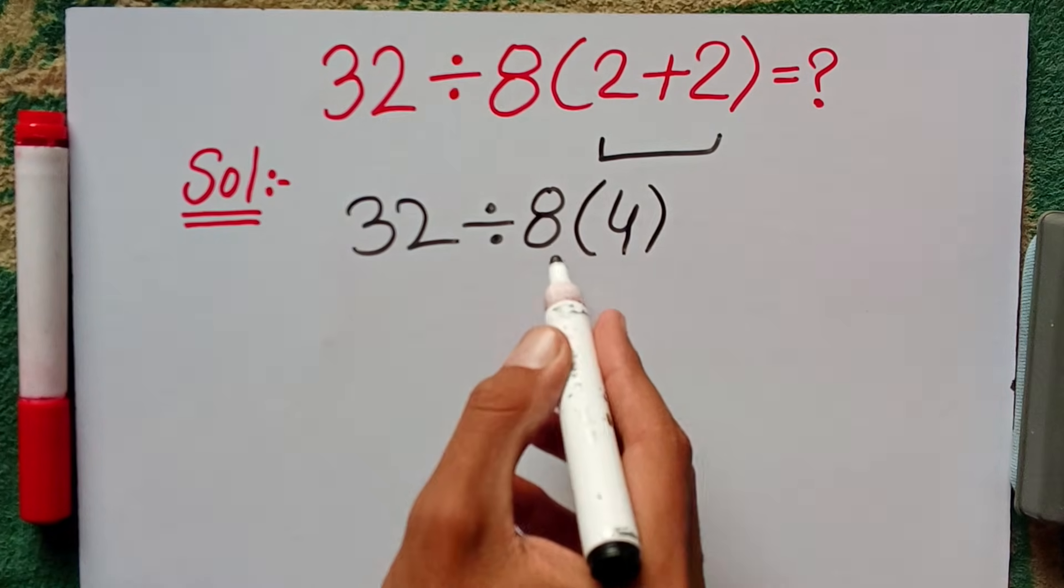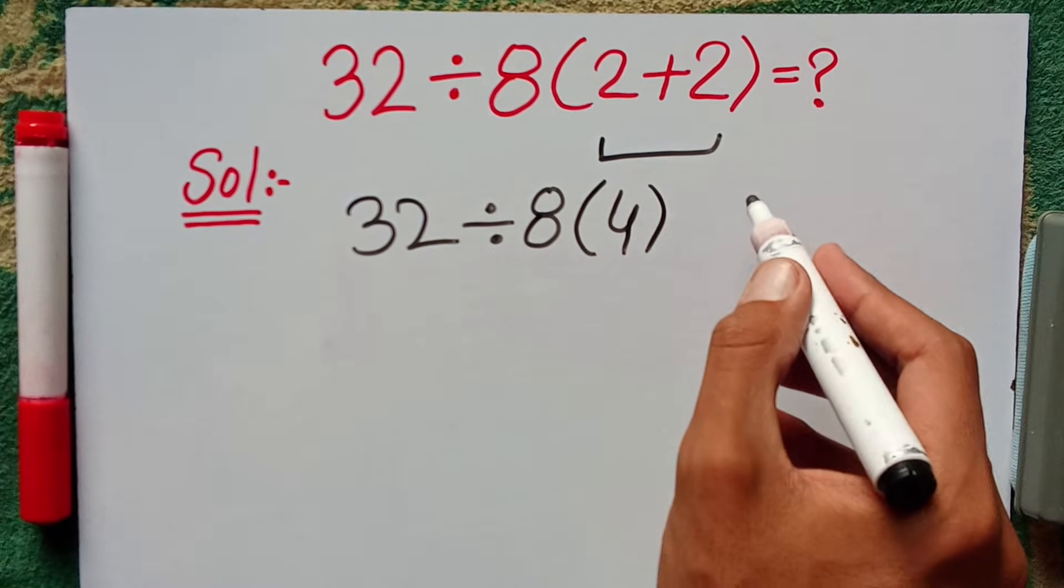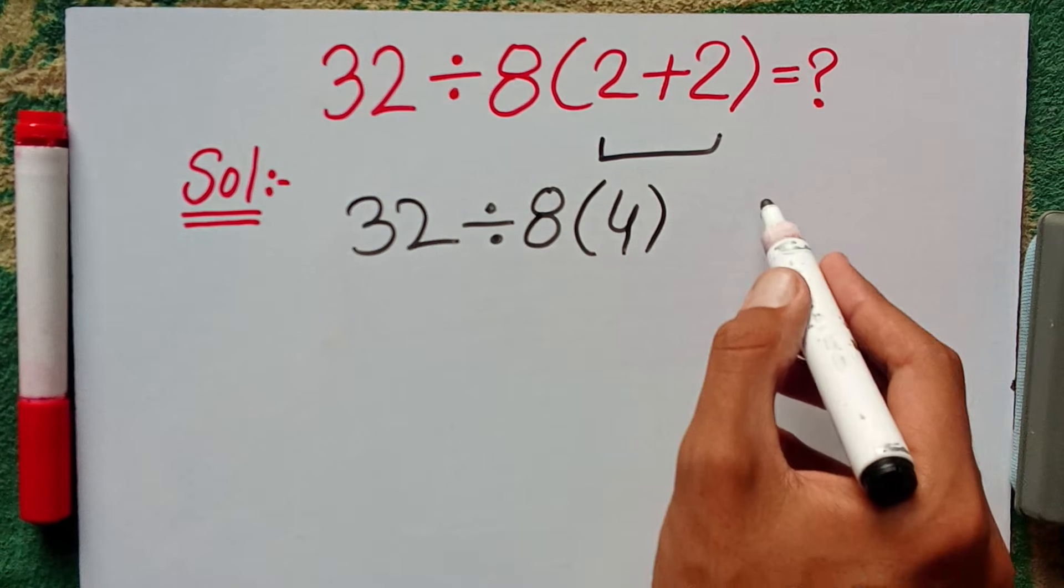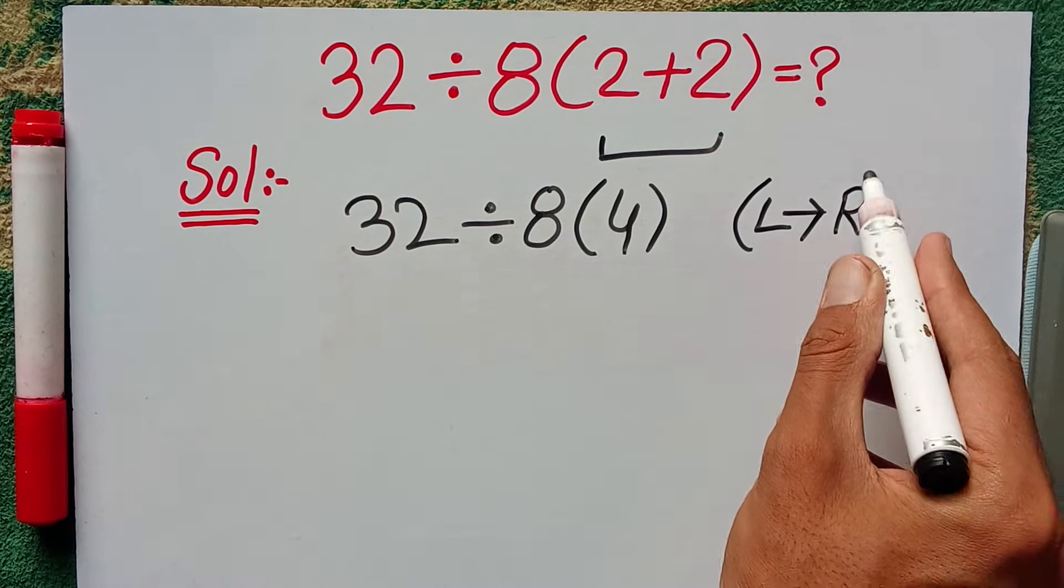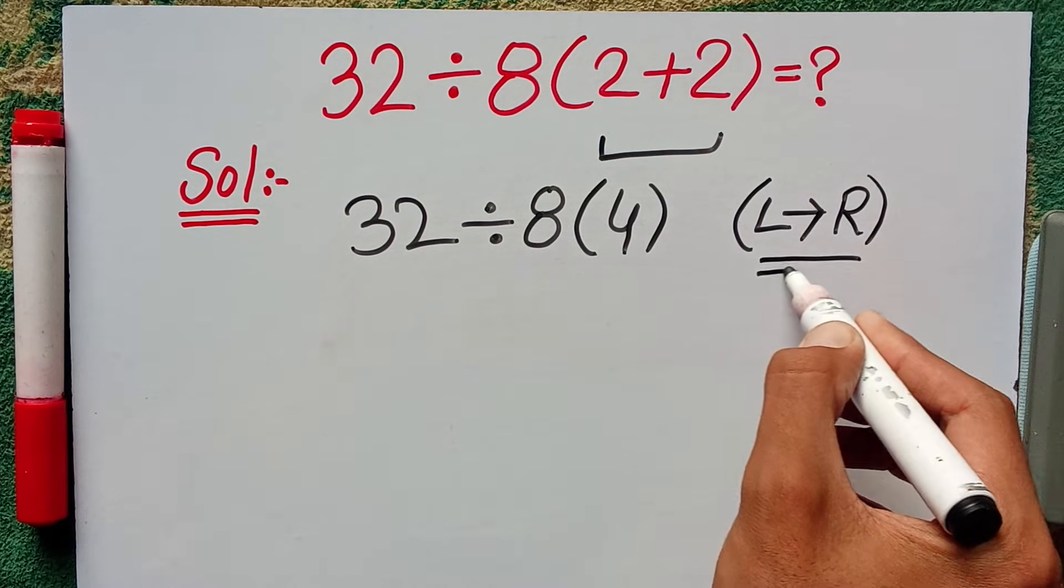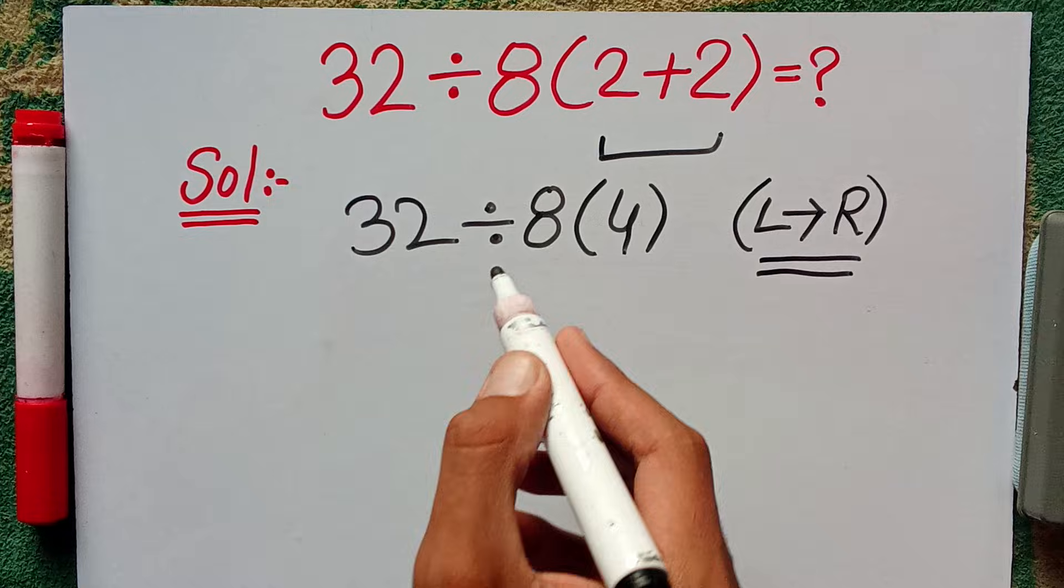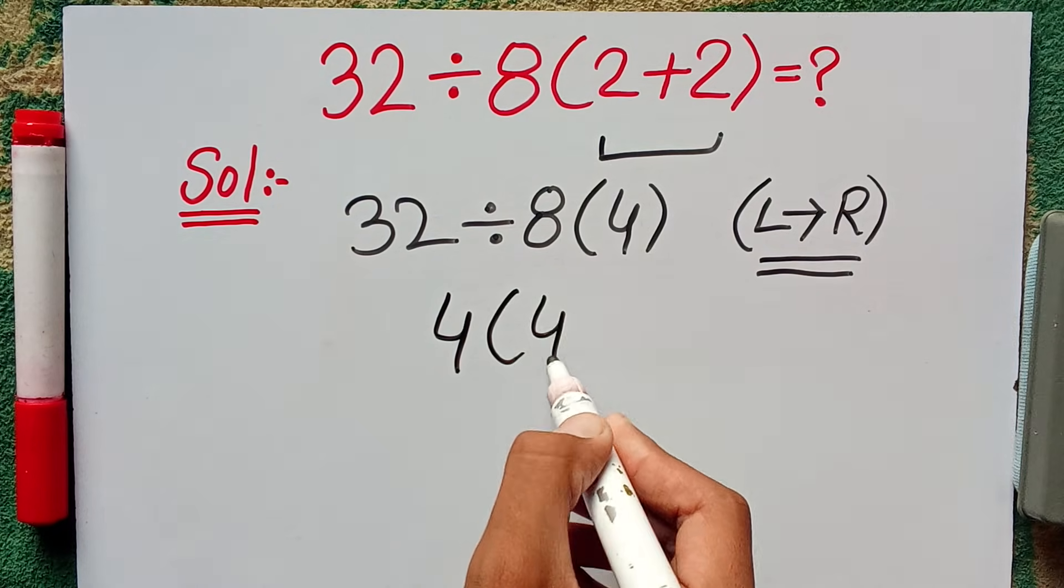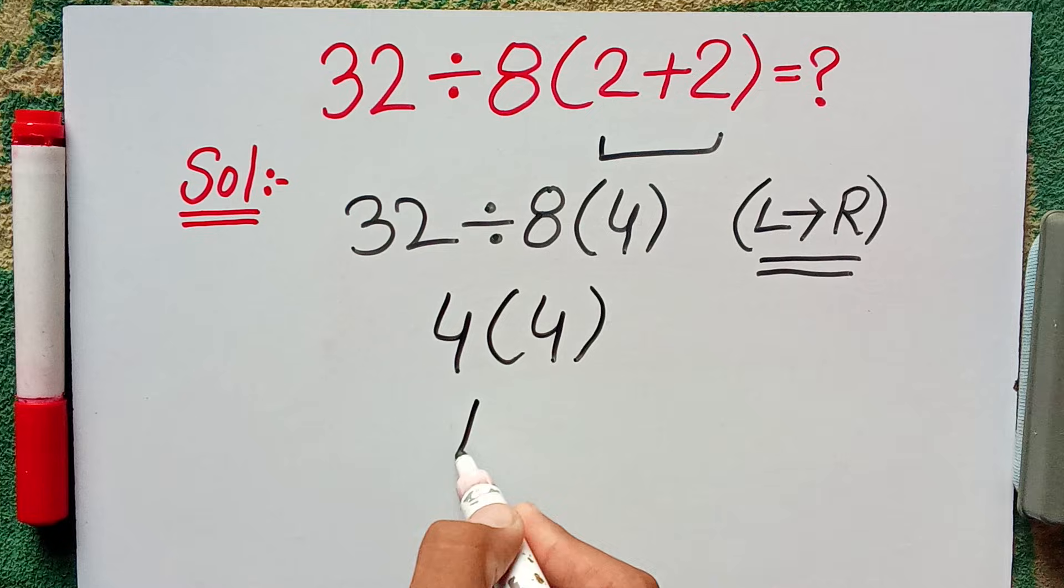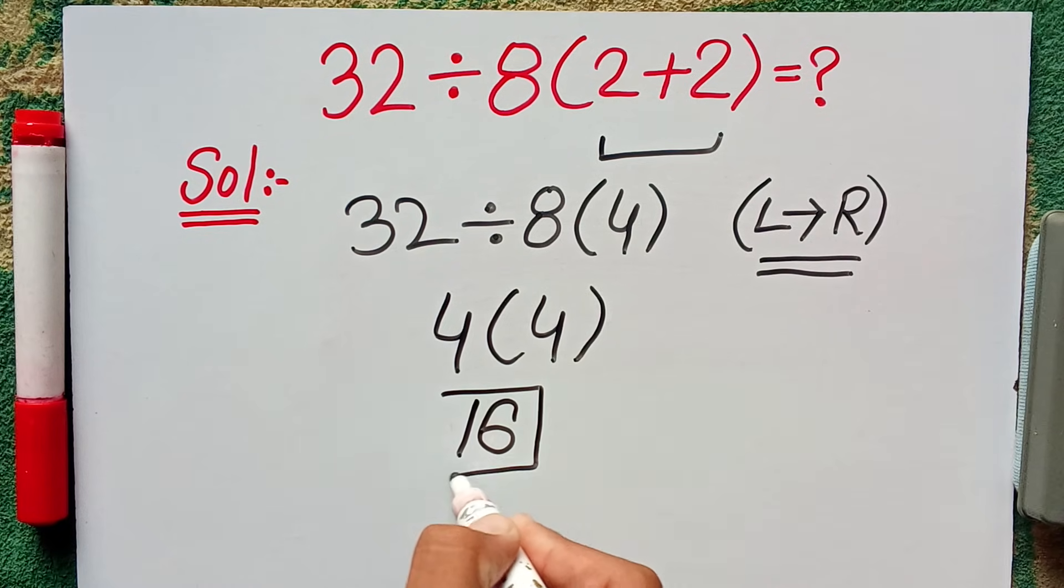Now here is multiplication and division. Multiplication and division have equal priority according to PEMDAS and we can solve it from left to right. So 32 divided by 8 equals 4 and 4 times 4 equals 16. This is the final answer of this question.